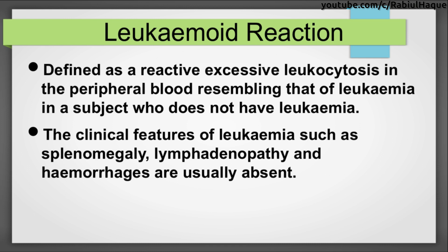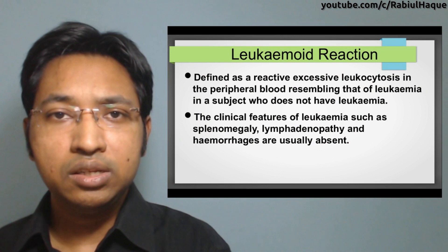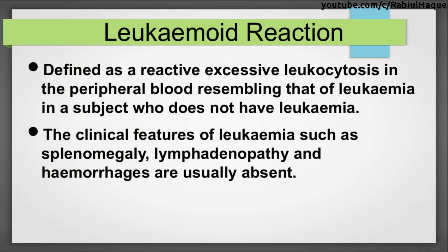Leukemoid reactions are defined as reactive excessive leukocytosis in which the peripheral blood resembles leukemia, but the subject does not have leukemia. There is a high number of white blood cells in the peripheral blood film; however, bone marrow findings will not be those of leukemia. Clinical features of leukemia such as enlargement of the spleen, lymph nodes, and hemorrhages are usually absent in leukemoid reaction.